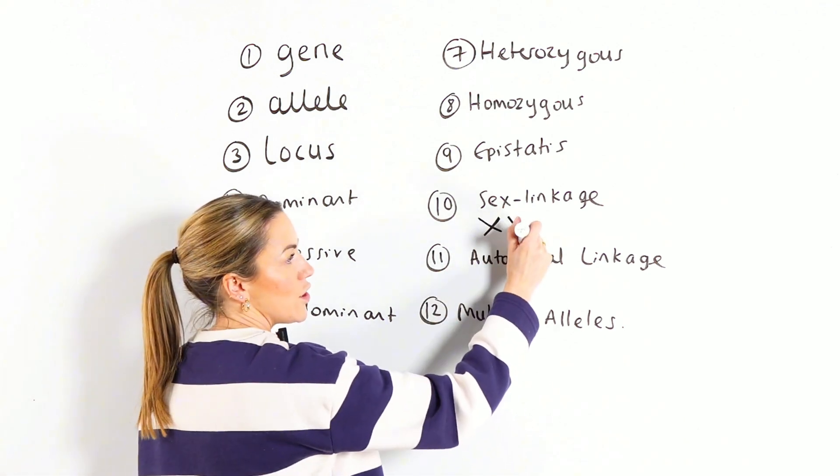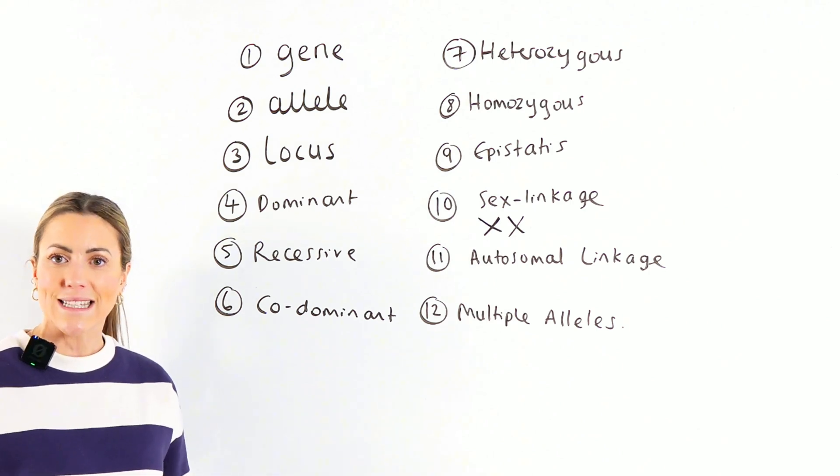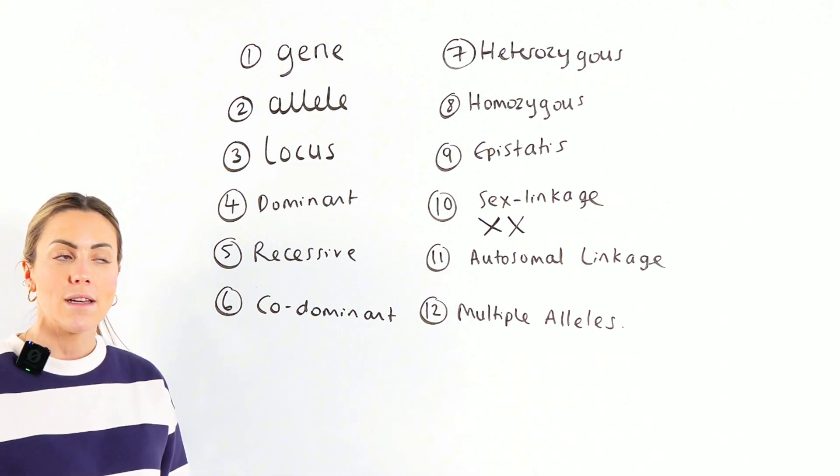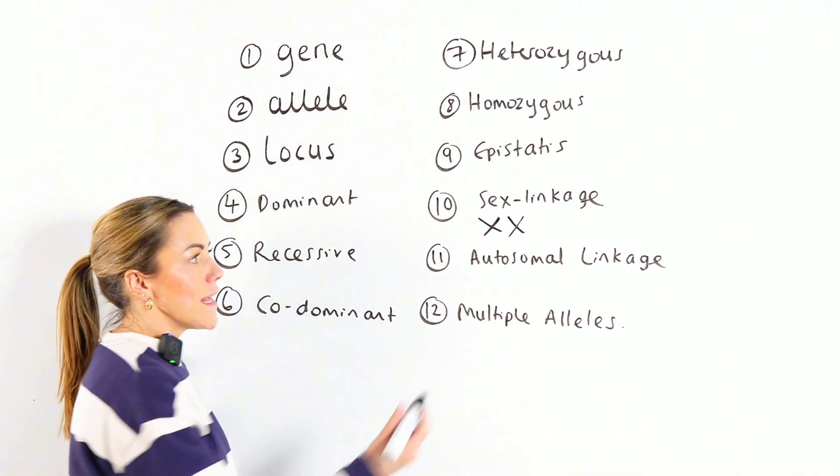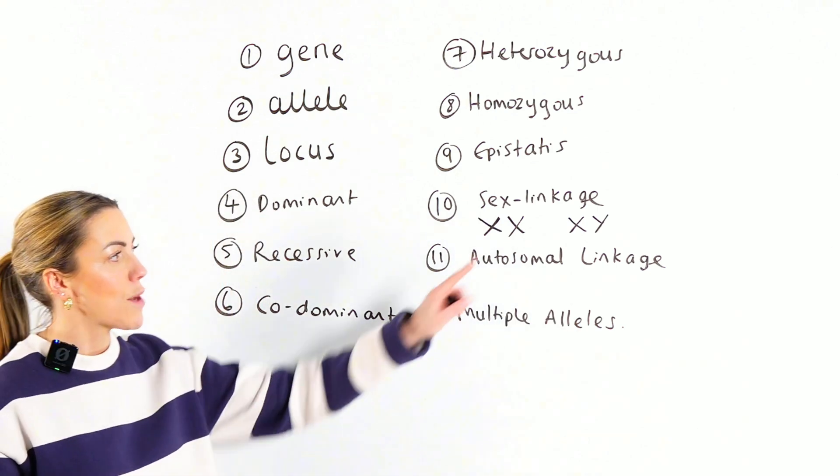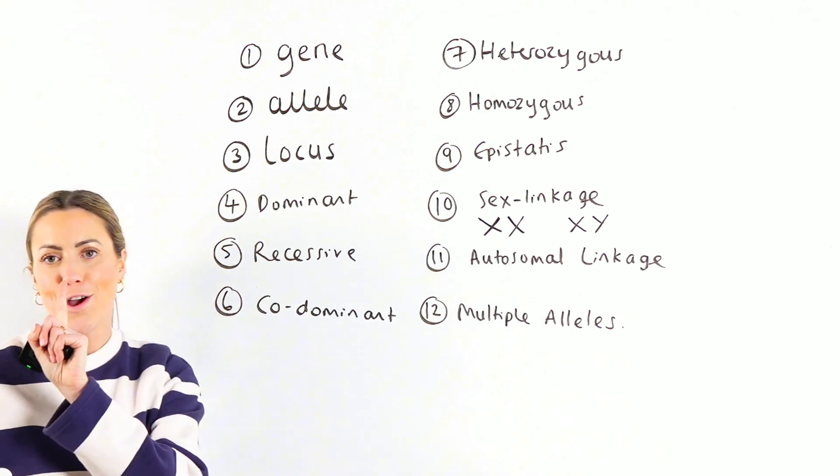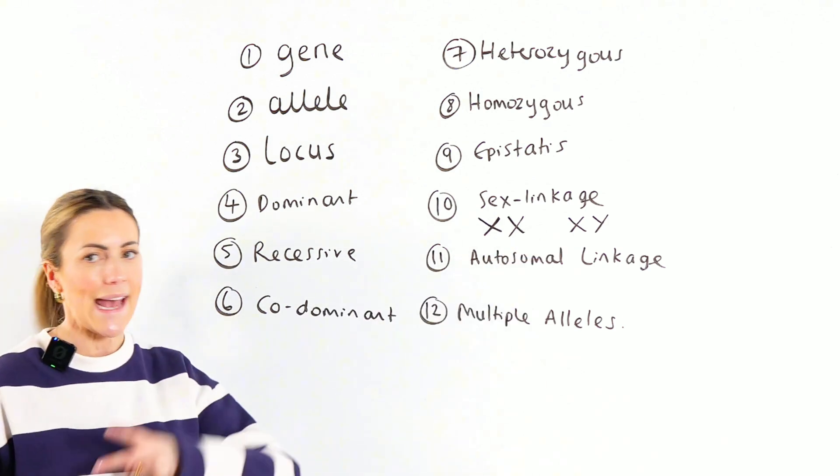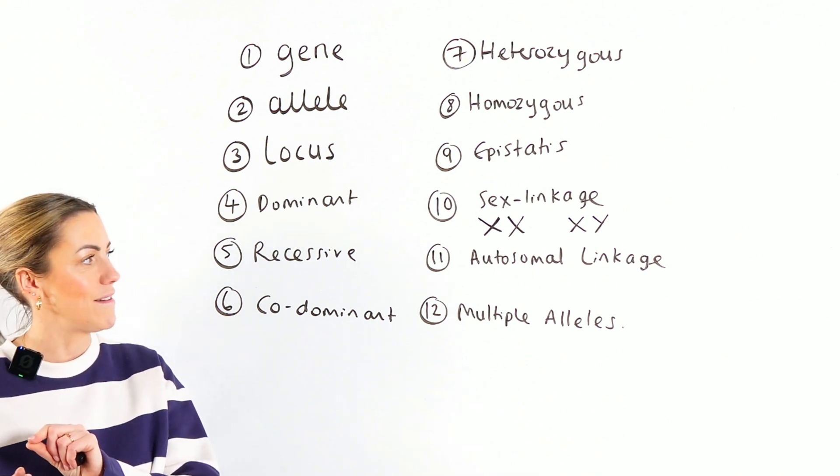So obviously, human females, we have two X chromosomes. So if a gene is sex linked or carried on the X chromosome, we would have two copies of that gene, maybe a dominant and a recessive or two recessives or two dominants. If we're a human male, we have XY chromosomes. So if a sex link gene is carried on the X chromosome, they would only have one copy of that sex link gene. So there's no possibility of them being heterozygous or being carriers because they're only going to have one dominant or one recessive.